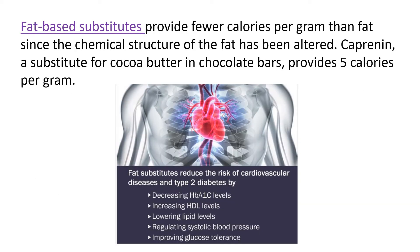The last one is fat-based substitutes. They provide fewer calories per gram than fat, since the chemical structure of the fat has been altered. Caprenin substitutes for cocoa butter in chocolate and provides 5 calories per gram. Fat substitutes provide various health benefits, such as reducing the risk of cardiovascular diseases and type 2 diabetes by decreasing HbA1c levels, increasing high density lipoprotein levels, lowering lipid levels, regulating systolic blood pressure, and improving glucose tolerance.